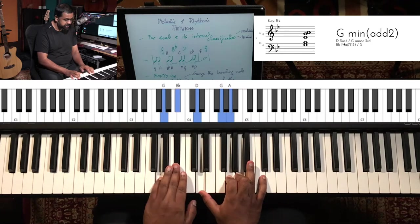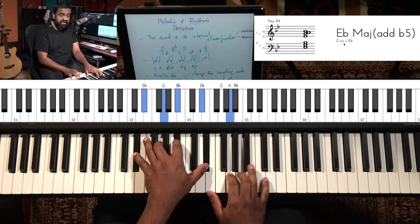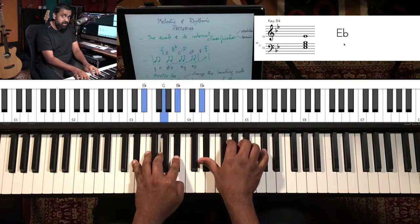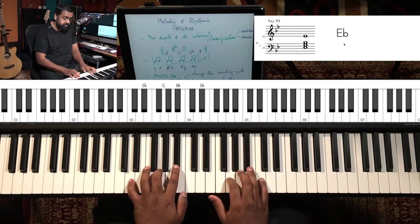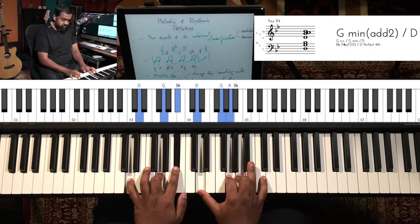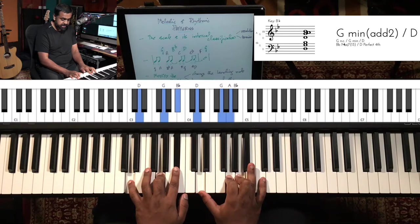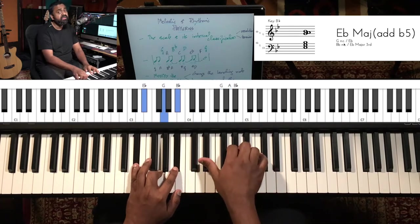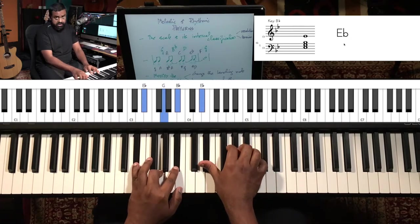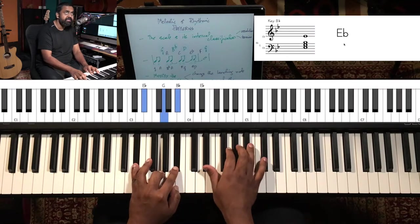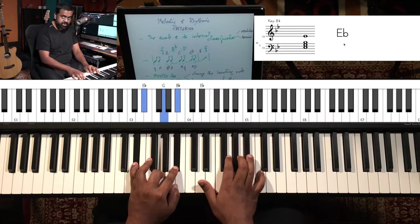If I repeat the same thing, maybe I want to change the ending to a chord tone. D is fine because it's part of the G minor chord — works great. Then I can do Eb because it's part of the Eb major chord. Let's do those two again.